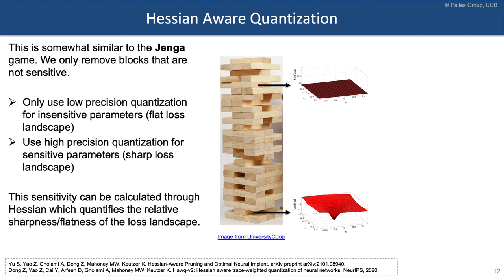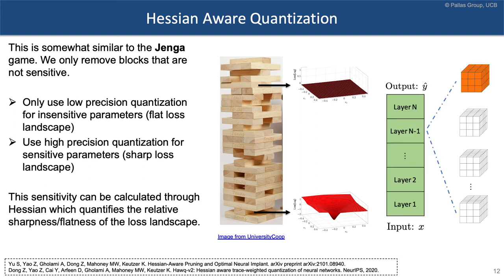How do we quantify this? In Jenga, we perturb a block and see whether it's carrying weight. We can apply the same idea to the neural network: perturb the parameters across all directions and observe the loss landscape. If the loss landscape is flat, the layer is not sensitive to quantization and we can use low precision. If the loss landscape is very sharp, even a tiny perturbation causes a big change in loss, so we keep that layer at high precision.